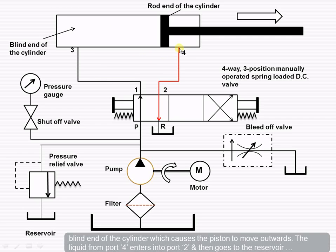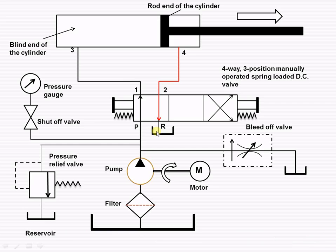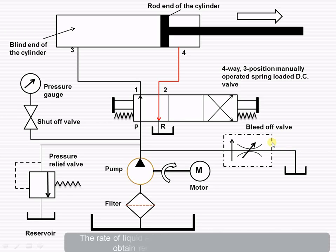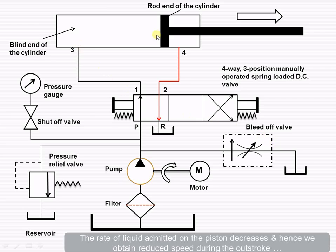The liquid from port 4 enters into port 2 and then goes to the reservoir. Now, you can see before entering into the port, some part of the liquid through this will go to the reservoir through this bleed-off valve. Hence, the rate of liquid which is admitted on this piston decreases, and we obtain the reduced speed of the piston during the outstroke.